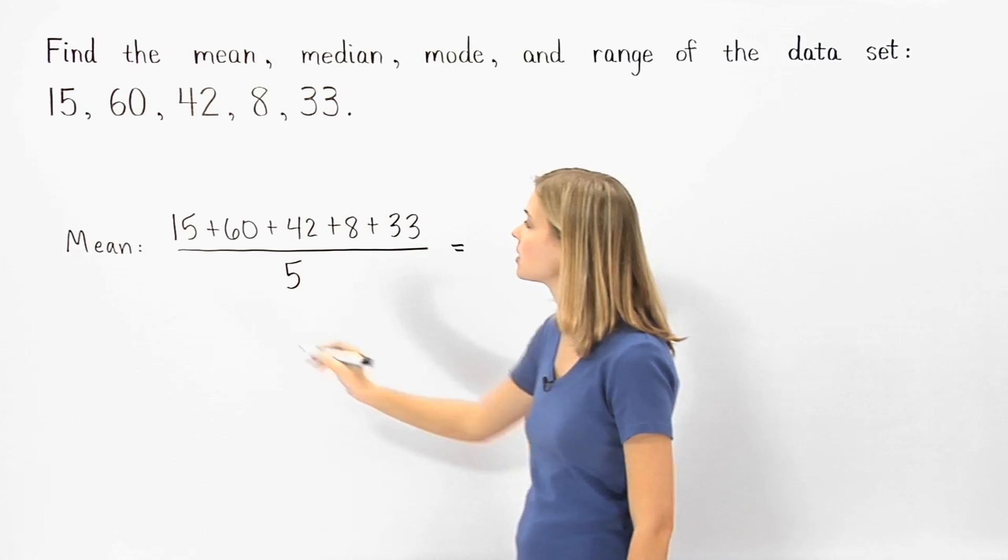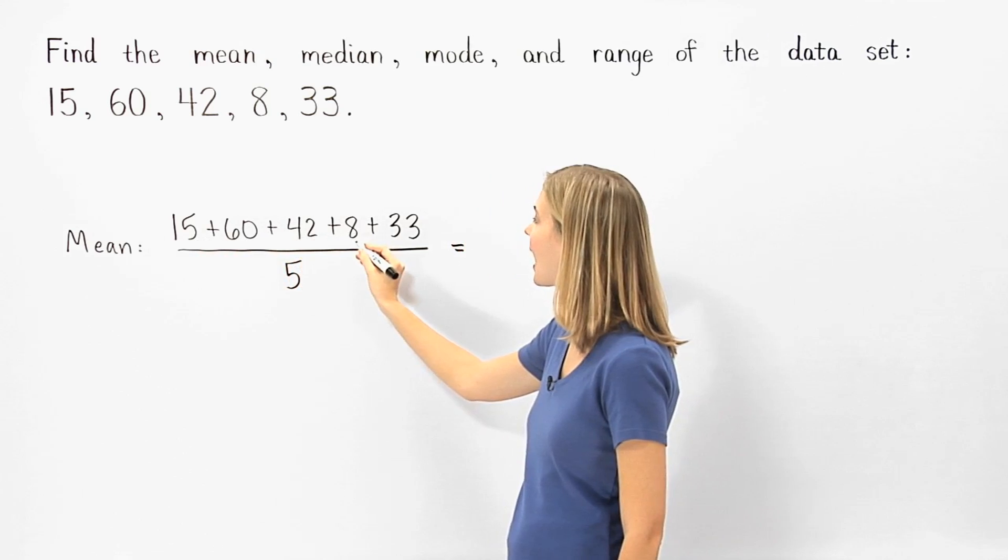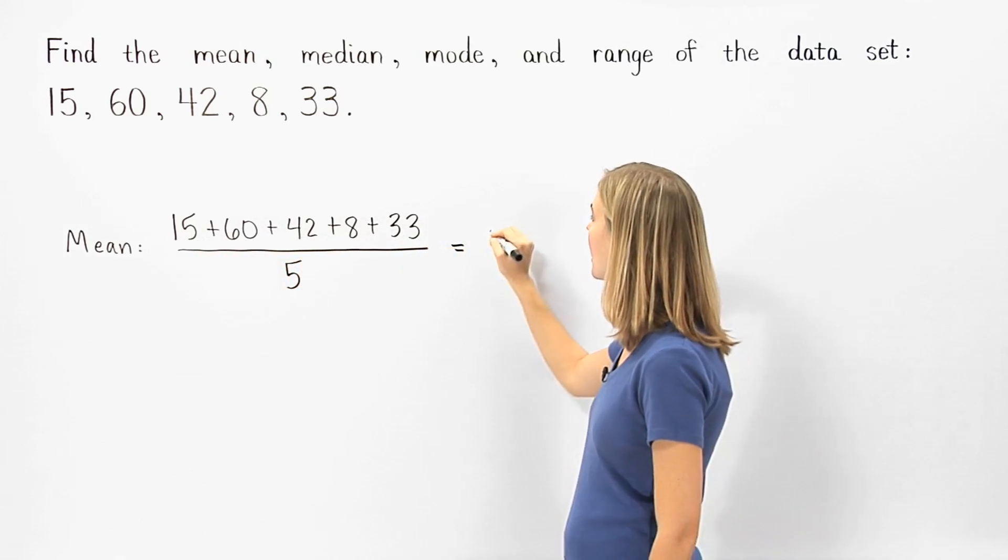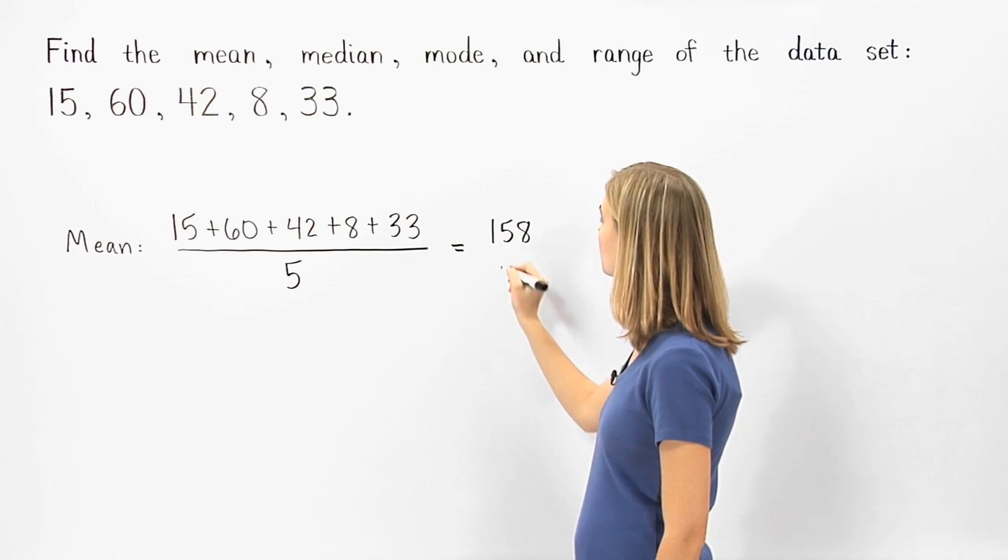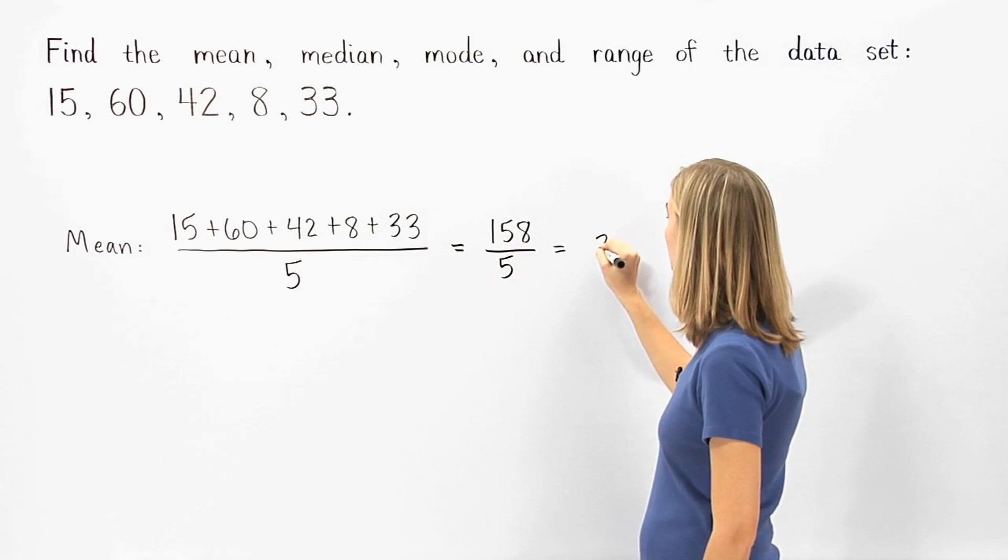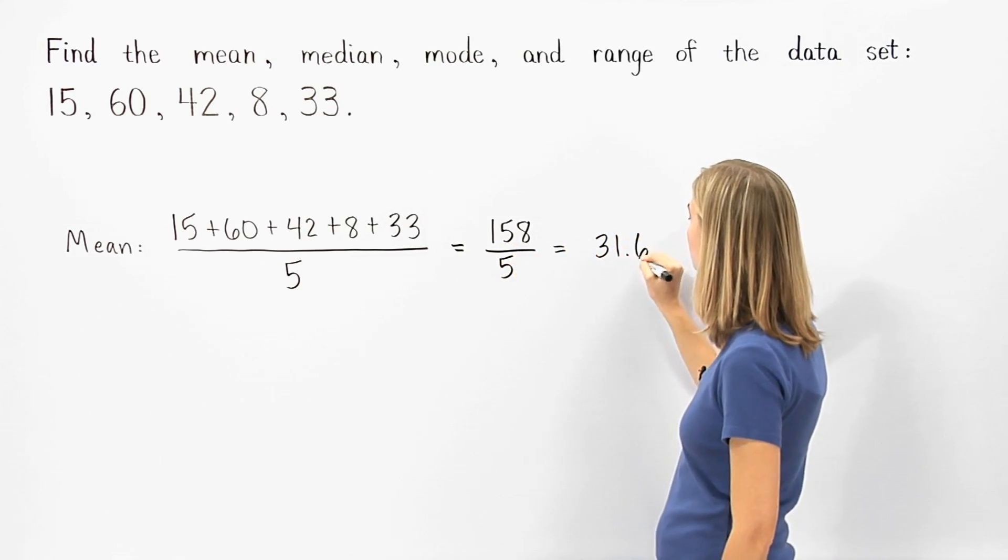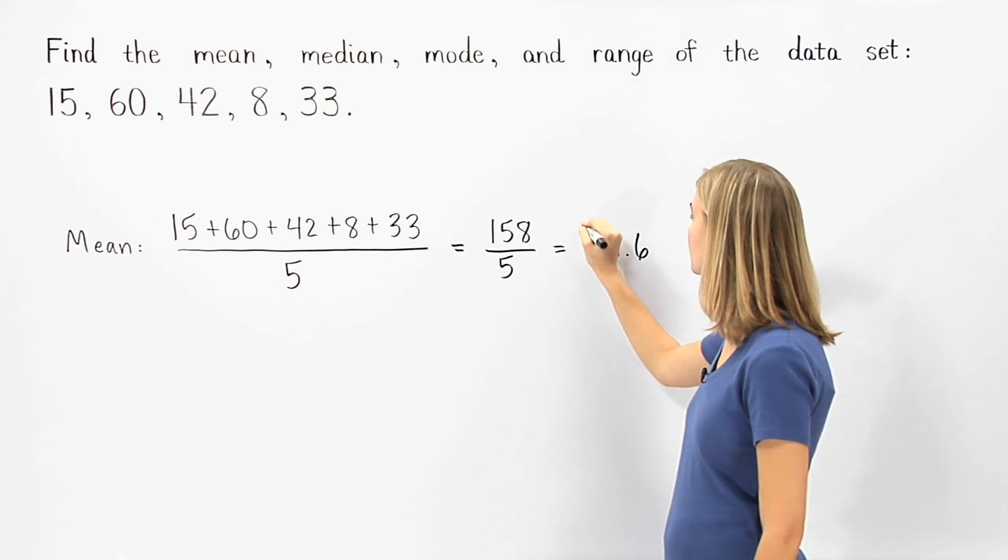Now, simplifying in the numerator, 15 plus 60 plus 42 plus 8 plus 33 is 158. And we have 158 divided by 5, which equals 31.6. So the mean of the given data set is 31.6.